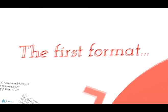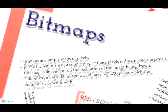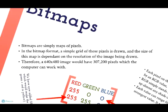The first format: Bitmaps. Bitmaps are simply maps of pixels. In the bitmap format, a simple grid of these pixels is drawn and the size of the map is dependent on the resolution of the image being drawn. Therefore, a 640x480 image would have 307,200 pixels which the computer can work with.